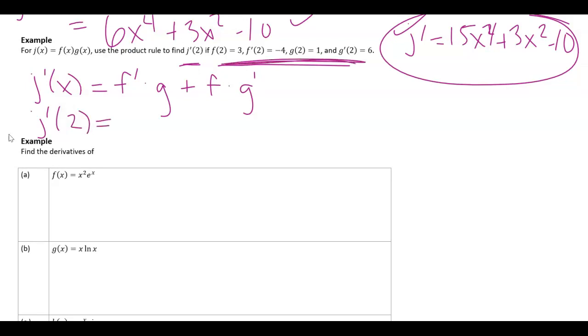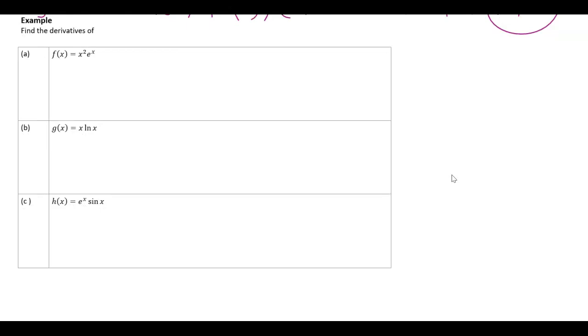So if I need to find j prime of 2, then I'm just going to plug in these values that they gave. So f prime at 2 is negative 4, g at 2 is 1, f at 2 is 3, and g prime at 2 is 6. So I get negative 4 plus 18, which equals 14.